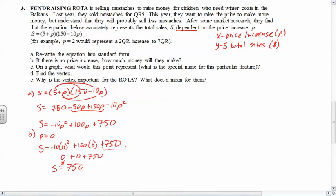Which is what we're going to answer on letter C: on a graph, what would this point represent? Well, P remember was X, so if X is 0, you may remember that that is always the y-intercept. So we've answered letter C.